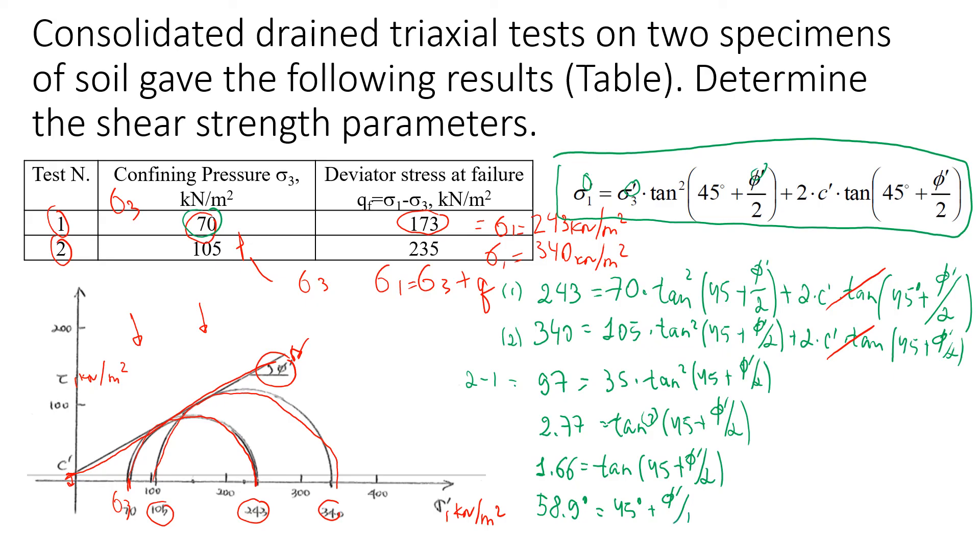From here we're going to find that friction angle is approximately 27.8 degrees. What we do next is use this friction angle and put it in one of the equations, either number one or number two, and then we just solve it for the cohesion.